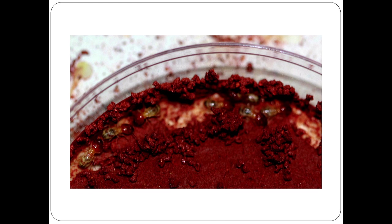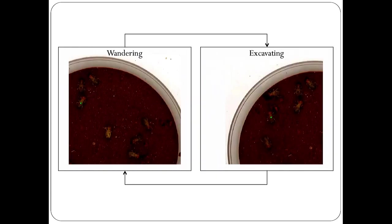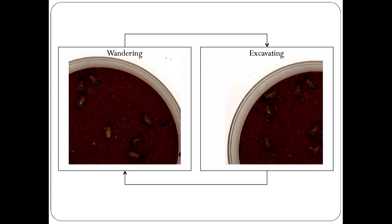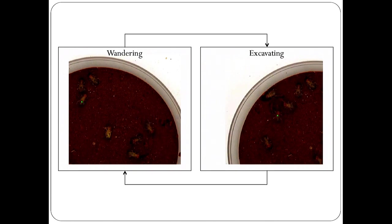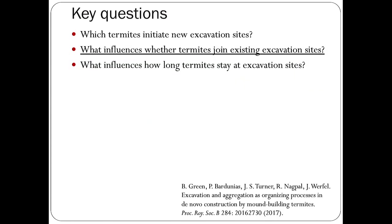This suggests a different basic model for how termites behave in these early stages. They're moving back and forth between two states: one in which they're moving through the arena without manipulating soil, and another in which they're in an excavating mode where they repeatedly get a pellet and put it right nearby. The termites' apparent focus on excavation made us ask questions also focused on excavation.